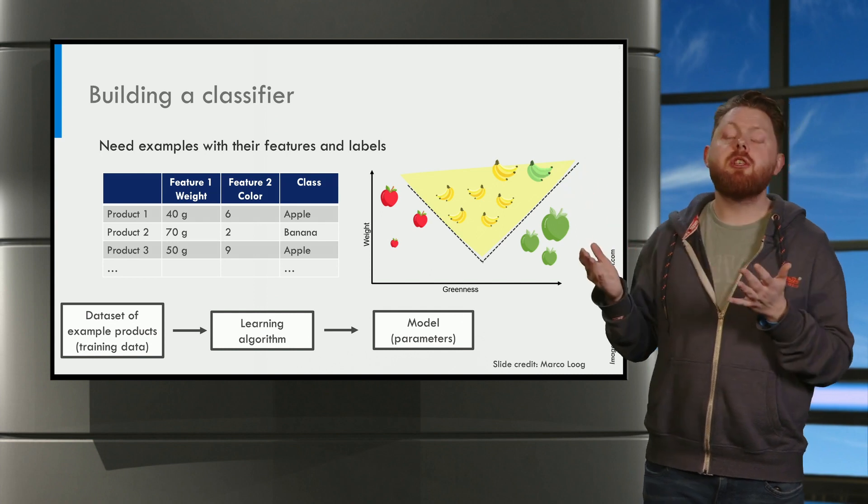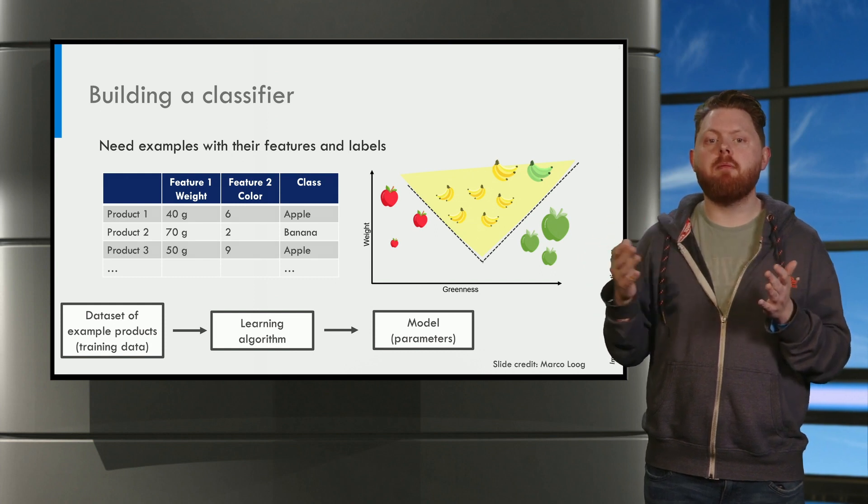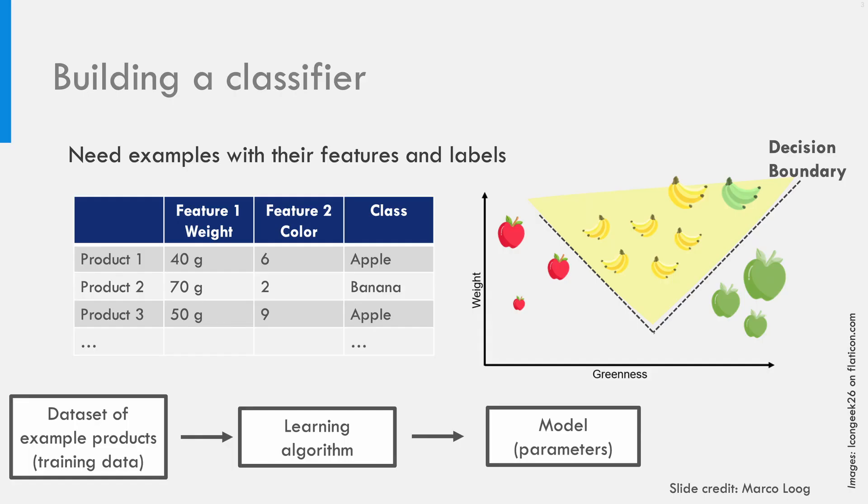And these regions are separated by what is called the decision boundary. That is the boundary where the model changes its decision.